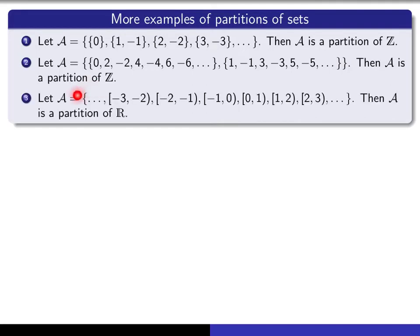Here's another example — a partition of the set of all real numbers. It consists of a bunch of left-closed, right-open intervals. They're all disjoint; no pair of them have any elements in common. But if you take the union, you get the entire set of real numbers. So that's a partition of ℝ.